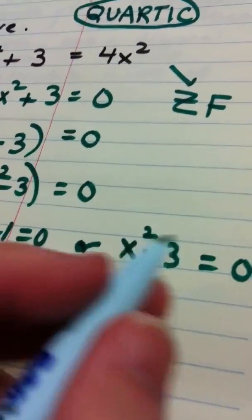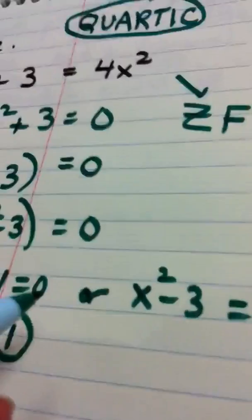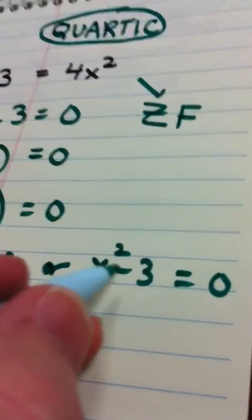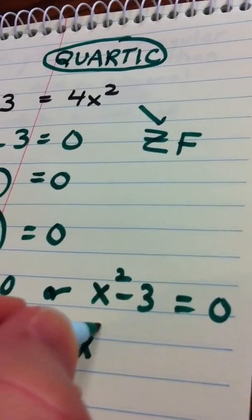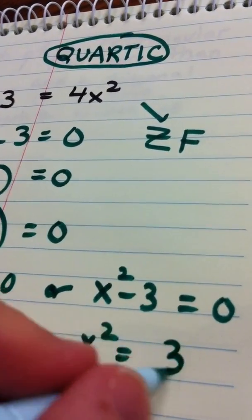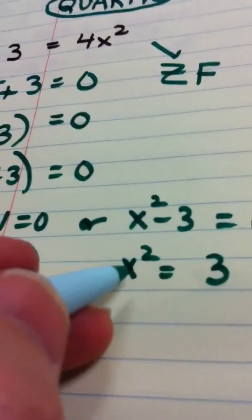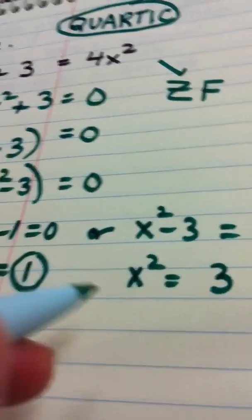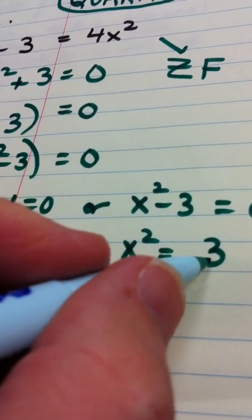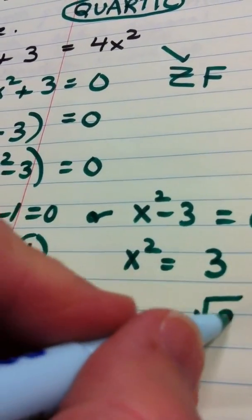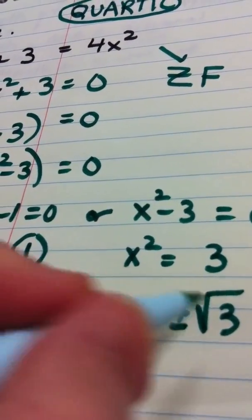And to solve this quadratic equation, we're going to apply the square root property. So the first thing I'm going to do is to move the constant over, x squared equals three. And if blah blah squared equals a constant, then blah blah, which in this case is x, what do I do to the constant? I take the square root of it, and what do I put in front? Plus or minus.